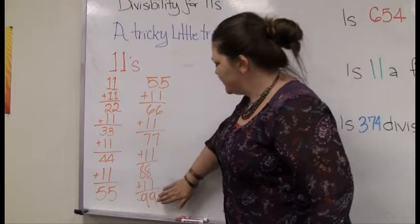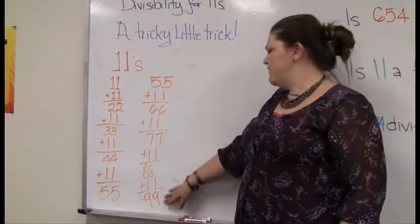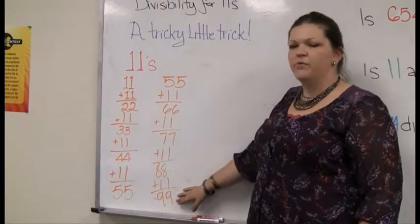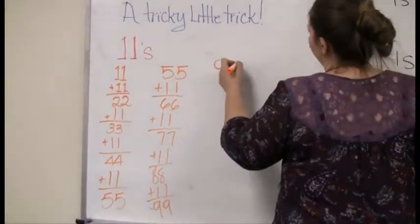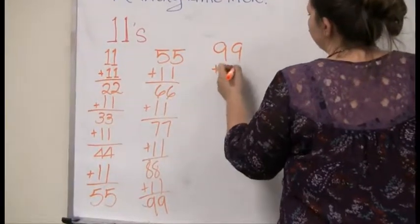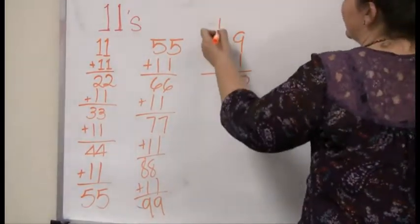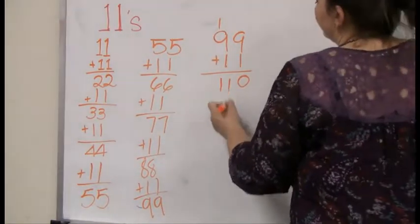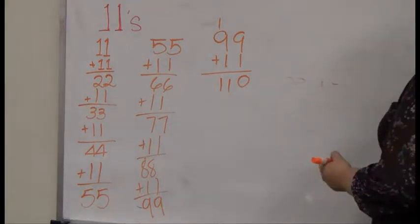And so everyone's instinct is now to tell me that the next number on the 11 times tables is going to be 1, 1, 1. And that's just not the case. So let's take a look at what happens. If you take 99 and you add 11, 9 plus 1 is 10. Carry that 1, and I end up with the number 110, and my pattern is kind of broken.